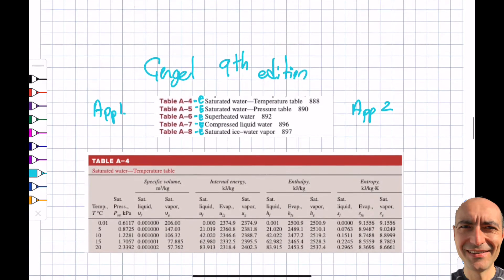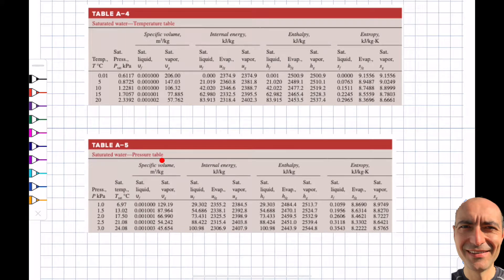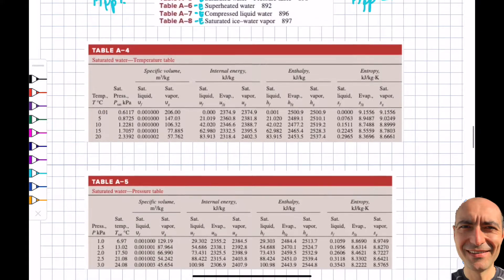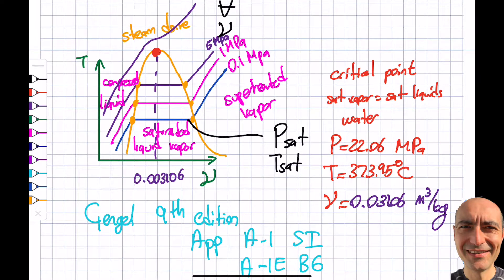Table A4 is the saturated water temperature table, and A5 is also saturated water but listed as a function of pressure. Any information within the saturation region — the area between the saturated liquid and saturated vapor lines on the diagram — will be obtained from A4 and A5.